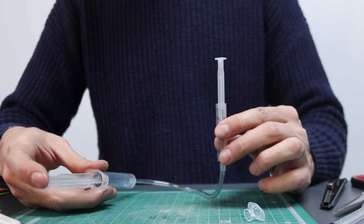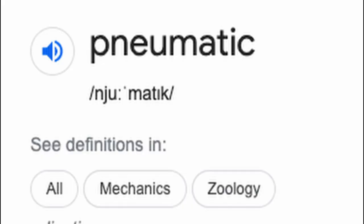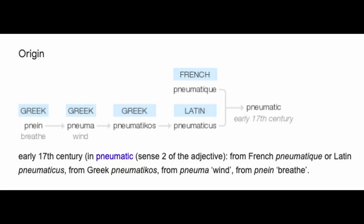We're going to start by creating a pneumatic system. Now you might be thinking, what does that mean? Well, its meaning comes from the Greek word pneuma, which means air. So pneumatics just means a mechanical device that's powered by air.